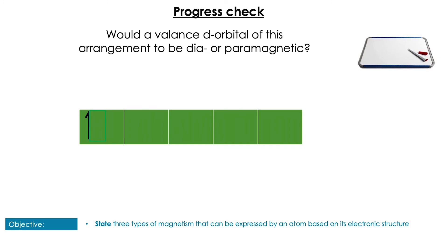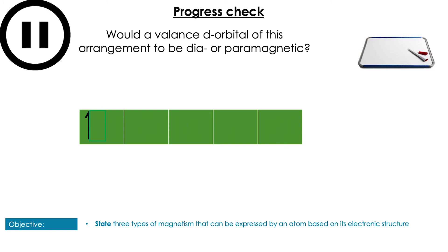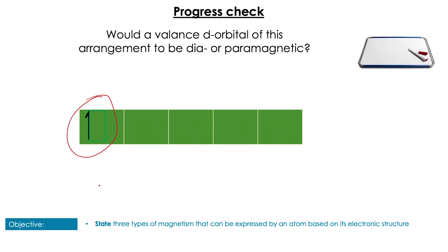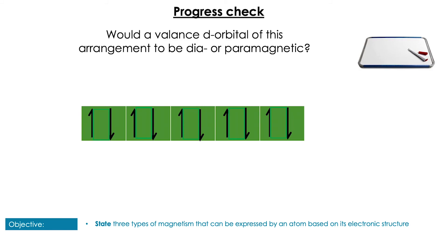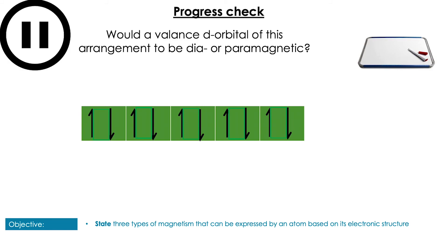Another set of valence d electrons — would you expect this to be diamagnetic or paramagnetic? Pause the video to have a go. Here we can see we only have one lone unpaired valence electron, so if we have an unpaired electron it is going to be paramagnetic again.